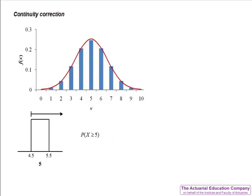How would we deal with the probability that X is greater than or equal to 5? It includes the probability that X equals 5, so the whole of the bar from 4.5 to 5.5, and it includes values greater than that. So the continuous equivalent of this would be the probability that X is greater than 4.5.